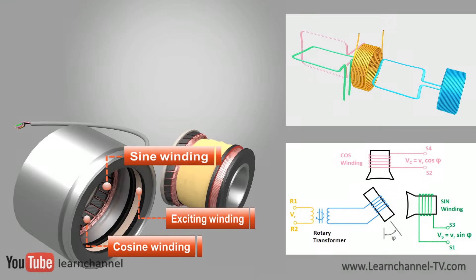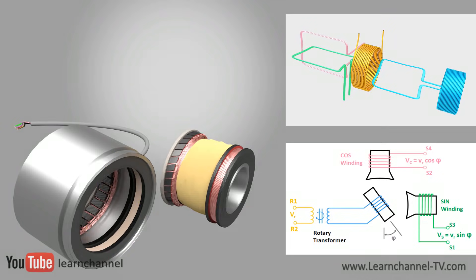Furthermore, we can name the rotor winding also as reference winding. The relative magnitudes of the sine and cosine voltage are measured to determine the angle of the rotor relative to the stator.